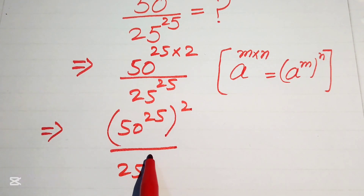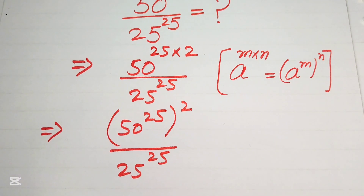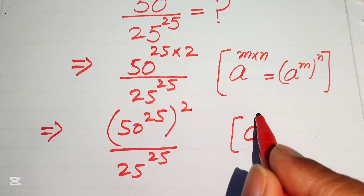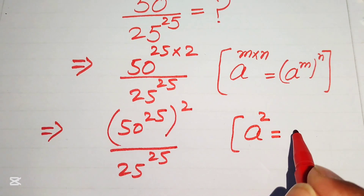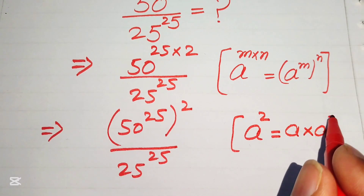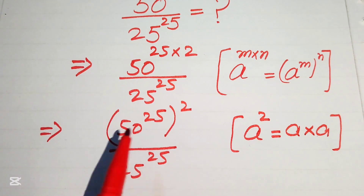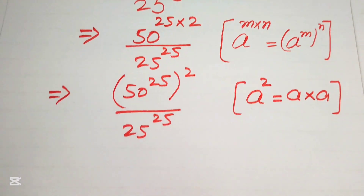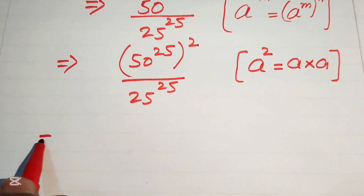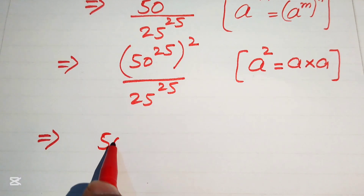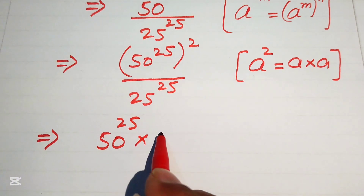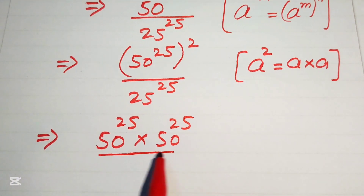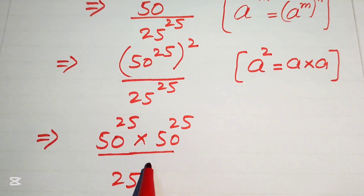We know that a squared means a multiplied by a. So we write (50 to the power of 25) squared as 50 to the power of 25 multiplied by 50 to the power of 25, and it is divided by 25 to the power of 25.